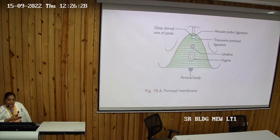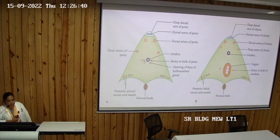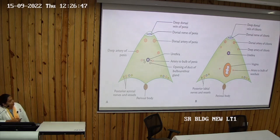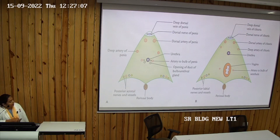What are the structures piercing the perineal membrane in male and female? In the male, the urethra pierces it; in the female, the urethra and vagina. For arteries: anteriorly, the dorsal arteries of the penis or clitoris; in the middle part, the deep artery of the penis or clitoris; posteriorly near the posterior margin, the posterior scrotal or posterior labial artery and nerves. Additionally, in the male, the perineal membrane is pierced by the ducts of the bulbourethral gland, which are absent in the female.